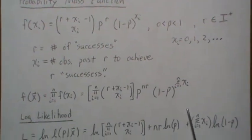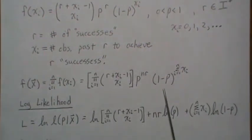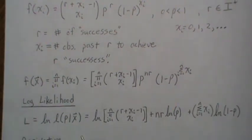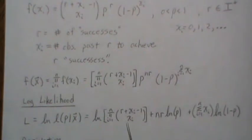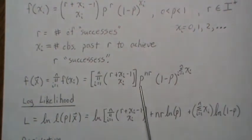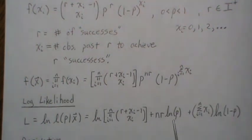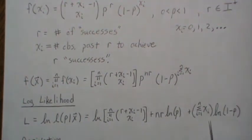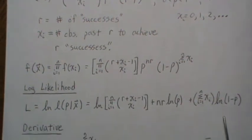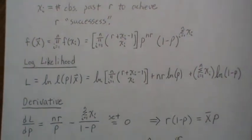Now the log likelihood of this is exactly that. We take the log of this, and the log of a product is the sum of the logs. So when we take the log of this, the NR can come out front the same way with the sum of the X_i's.